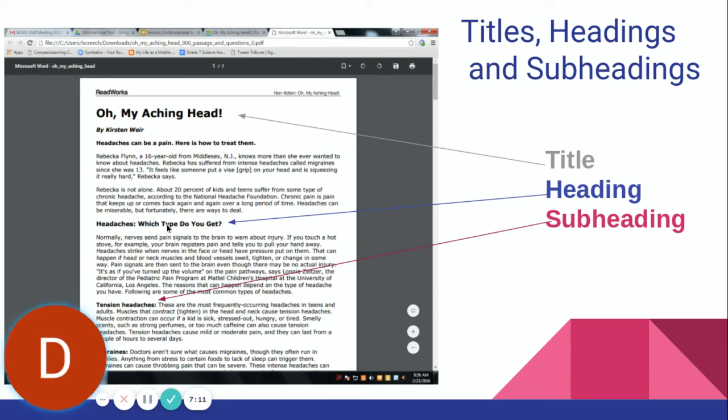However, underneath a heading, you might have a subheading. Notice they're smaller than the headings. They're also bold printed or they're another color. But these subheadings are part of the paragraph. Notice how they're not above the section. And so it'll tell us specifically tension headaches are this, migraines are this. They're going to give us even more detailed information on the different types.